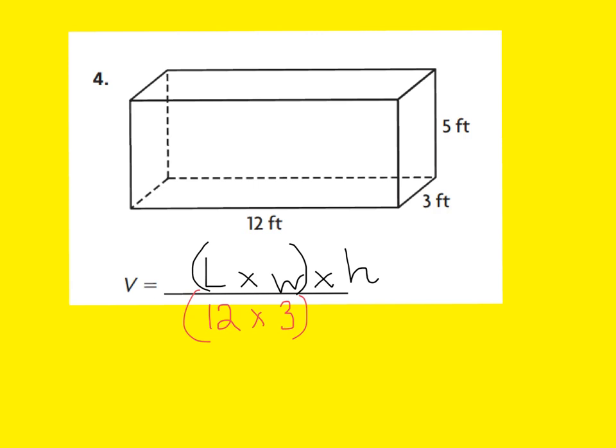Our height shows 5 feet, so I'm going to go ahead and write times 5. To solve for my base, which is 12 times 3, I know that to be 36. And I'm going to multiply that by my height of 5.